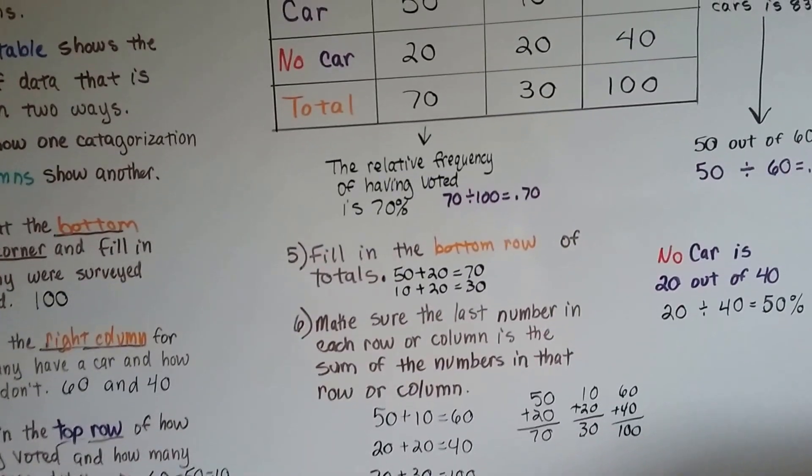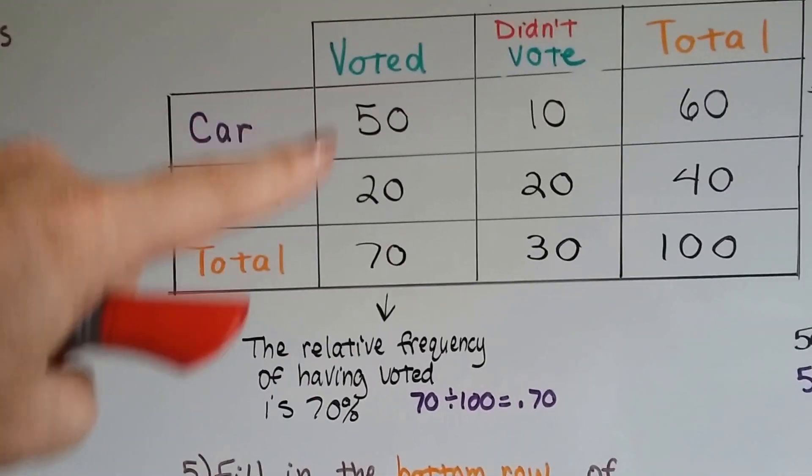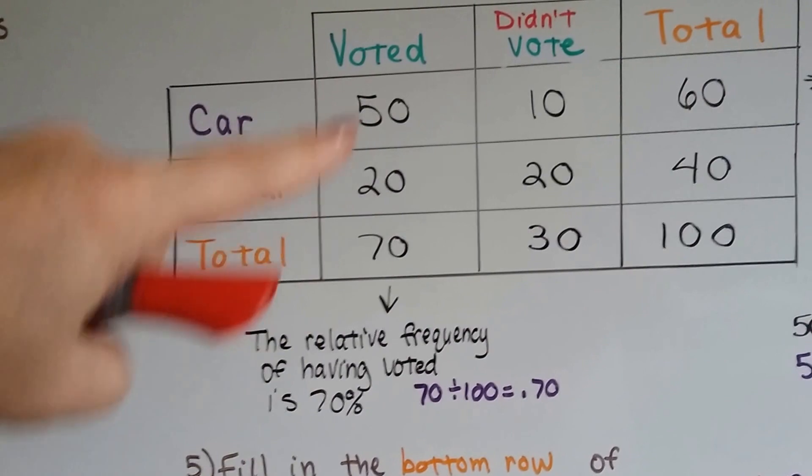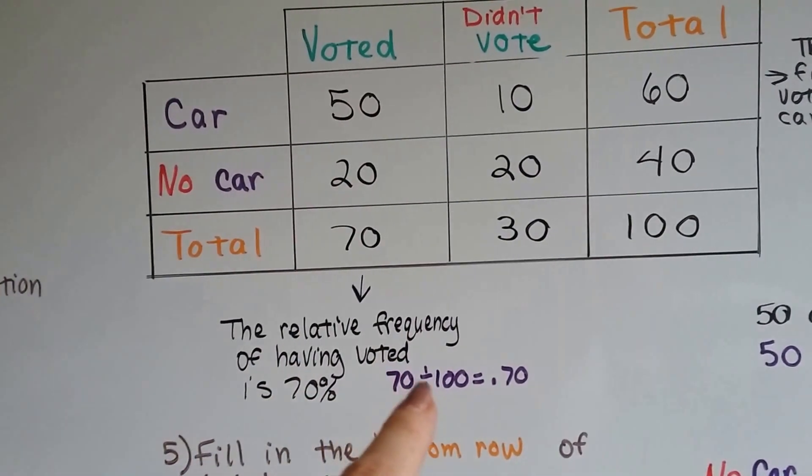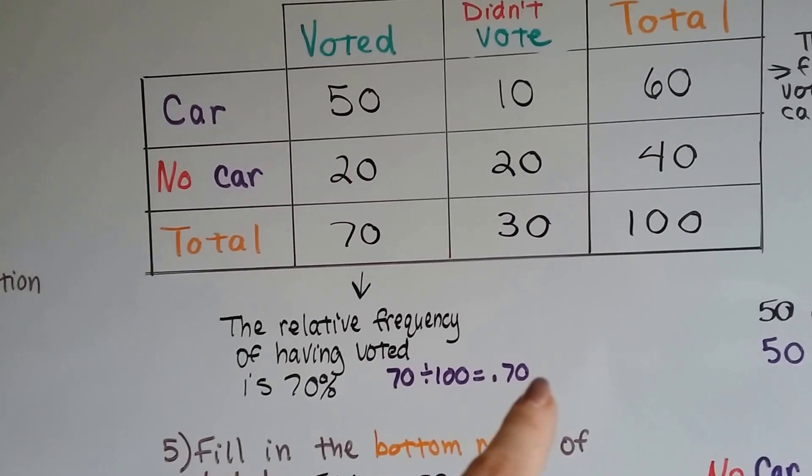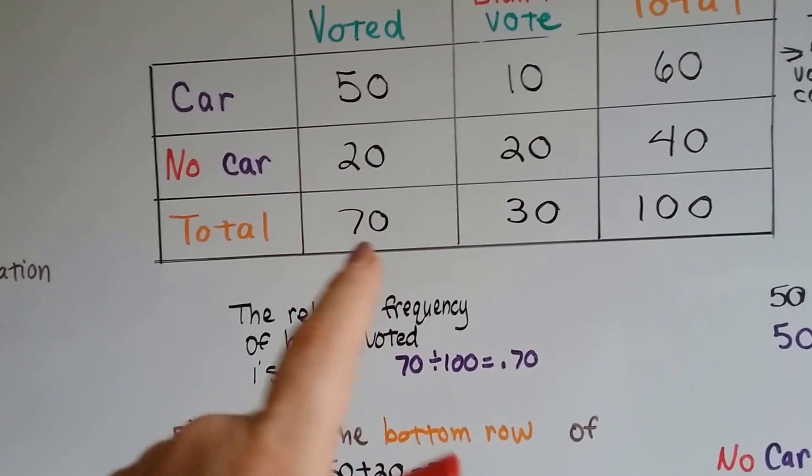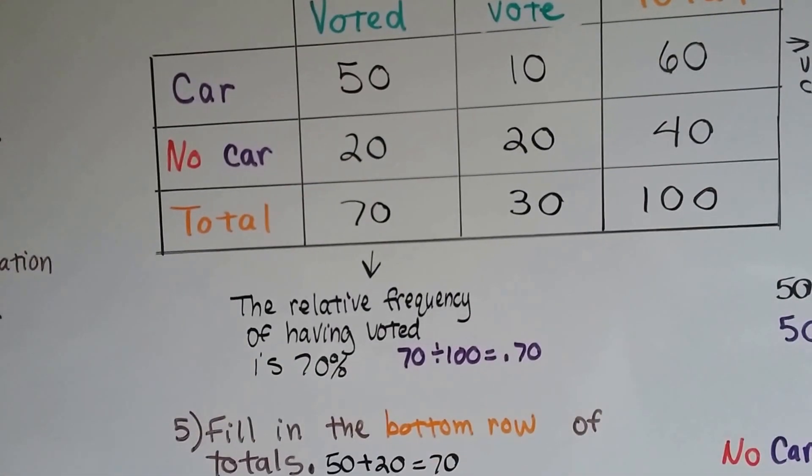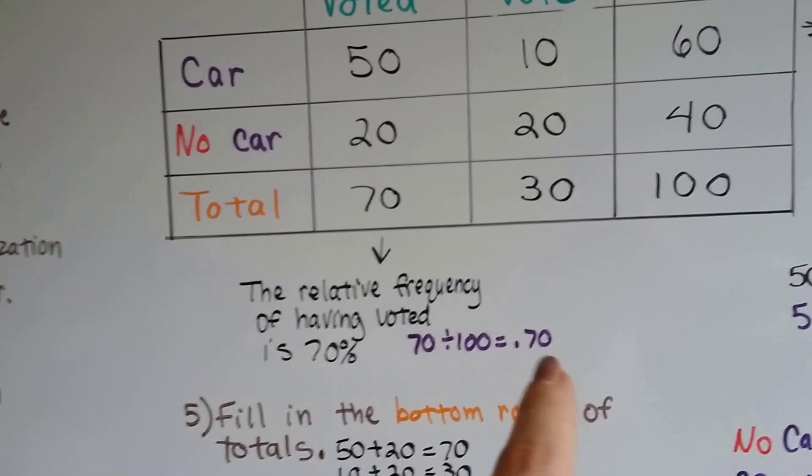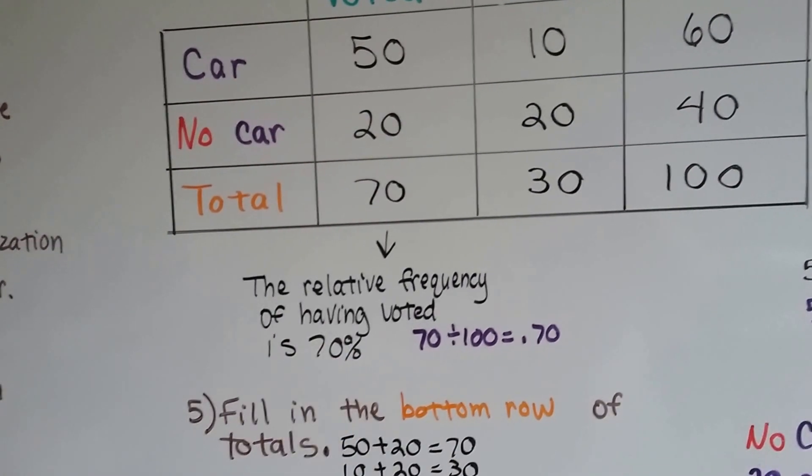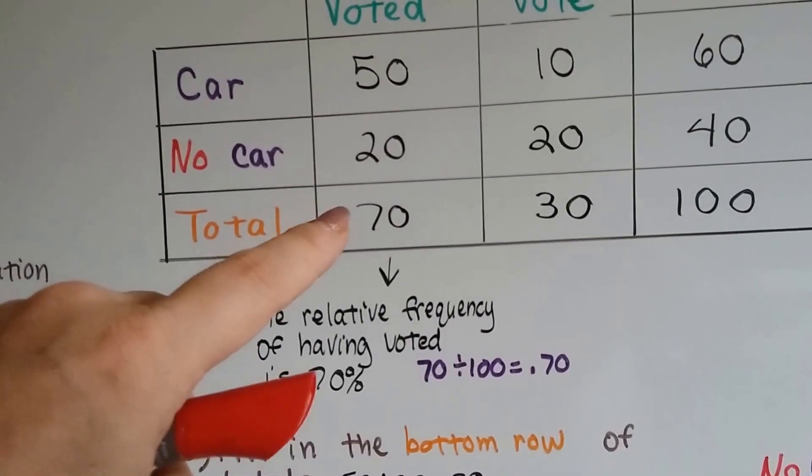Now we can look at this and try to interpret the information. The relative frequency of having voted is 70%. Because the total is 100, 70 divided by 100 is 0.70. I didn't divide 100 by 70, I did 70 divided by 100. 0.70 is 70 one hundredths or 70%. So the relative frequency of having voted is 70%.